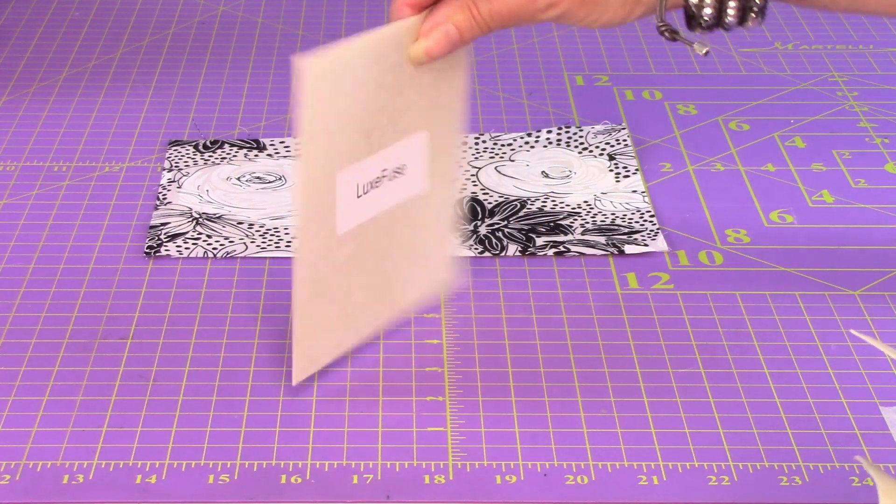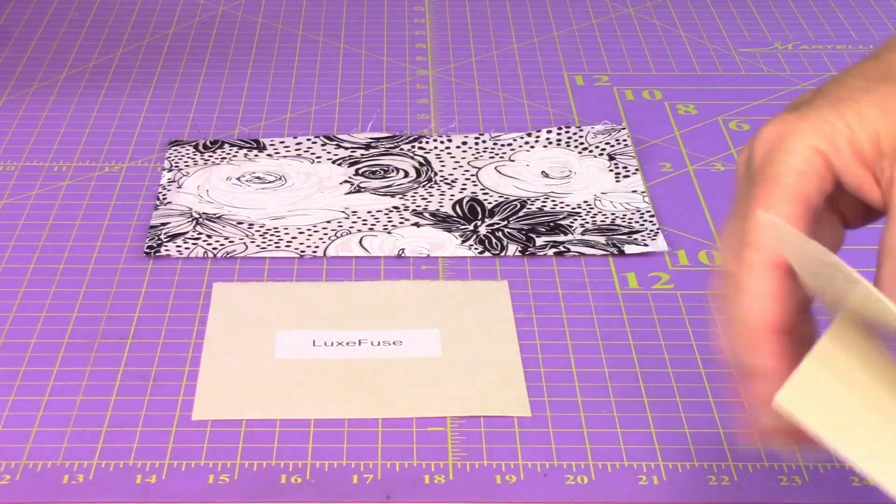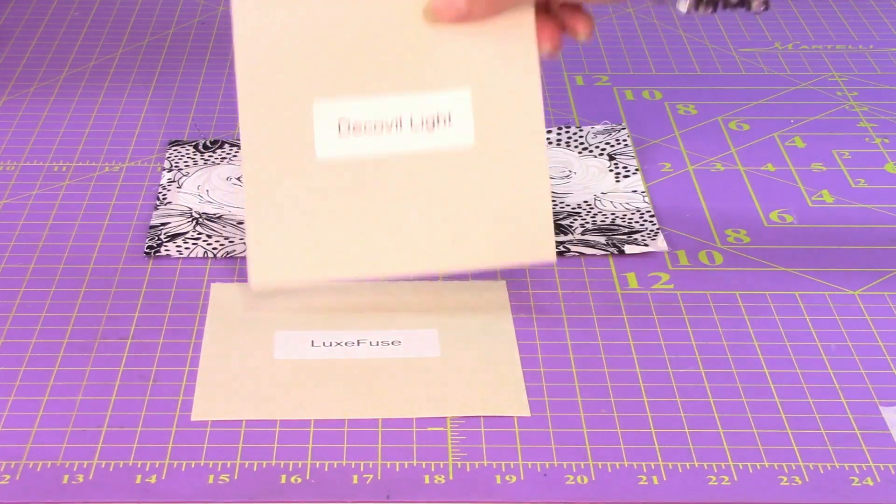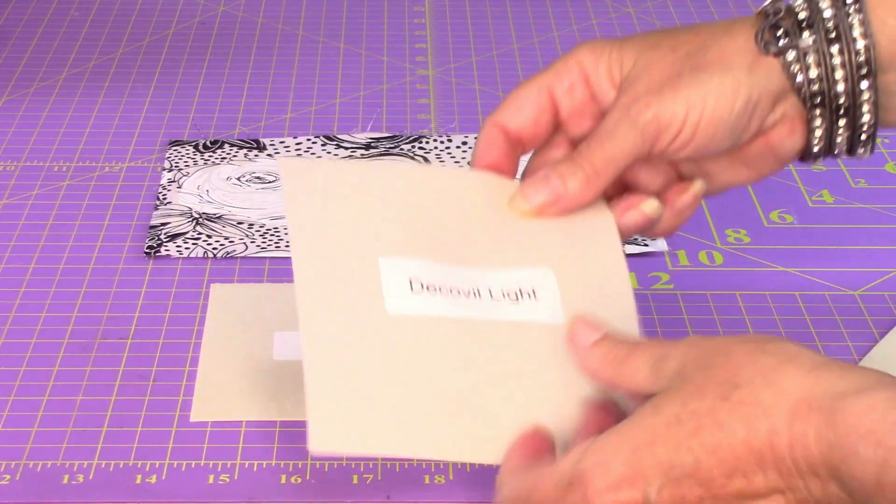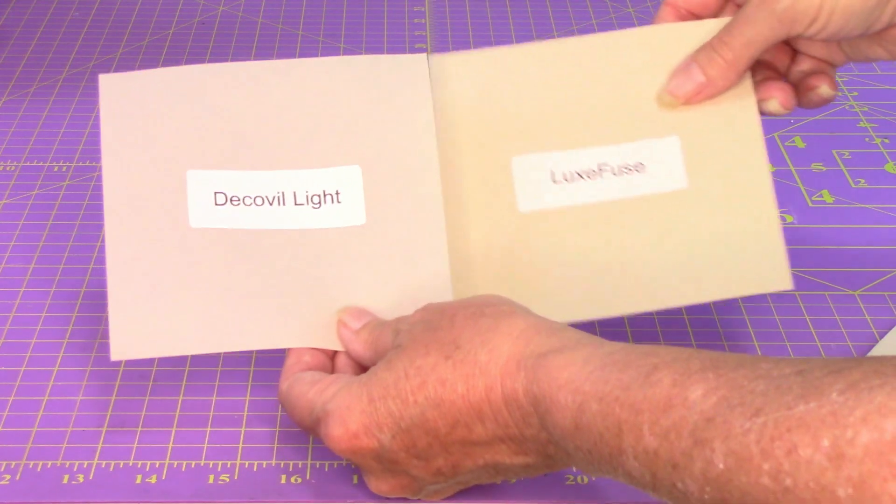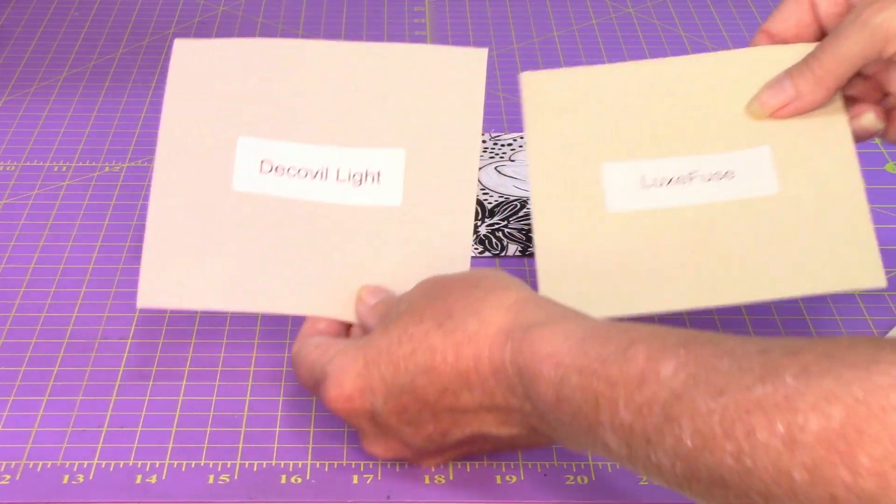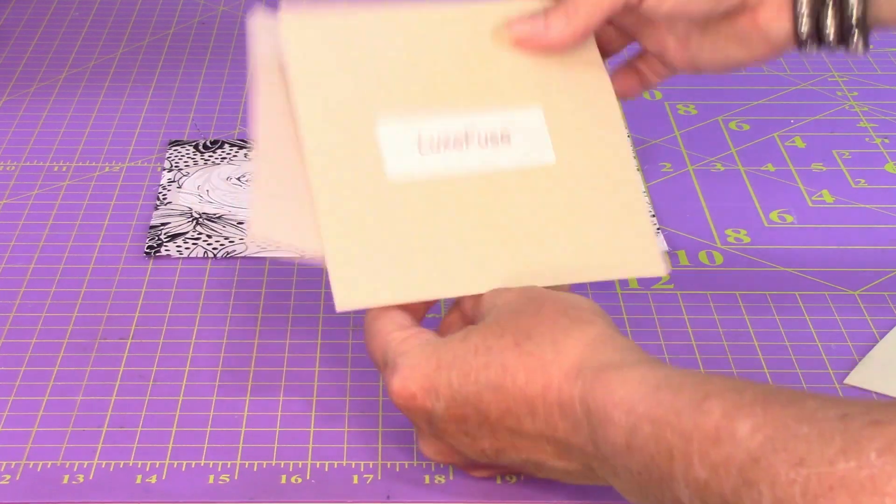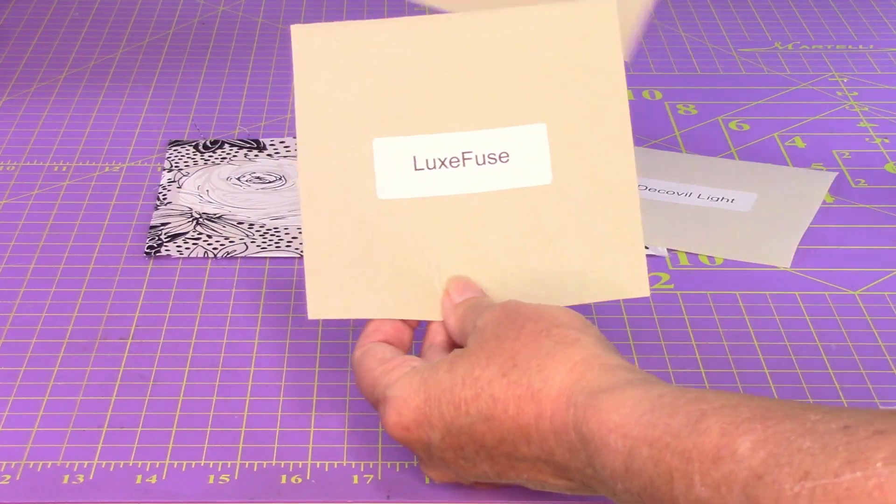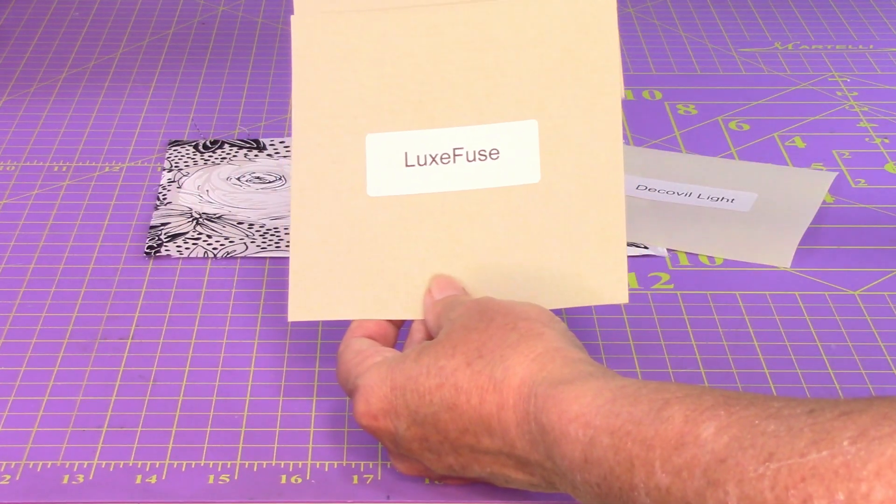Alright, so here's LuxFuse. This is DecaVille Light. Almost the same color, but you can kind of see. You can see through the DecaVille Light. There we go. You can see through it. But, let's turn this around. Not so much LuxFuse. A little bit.